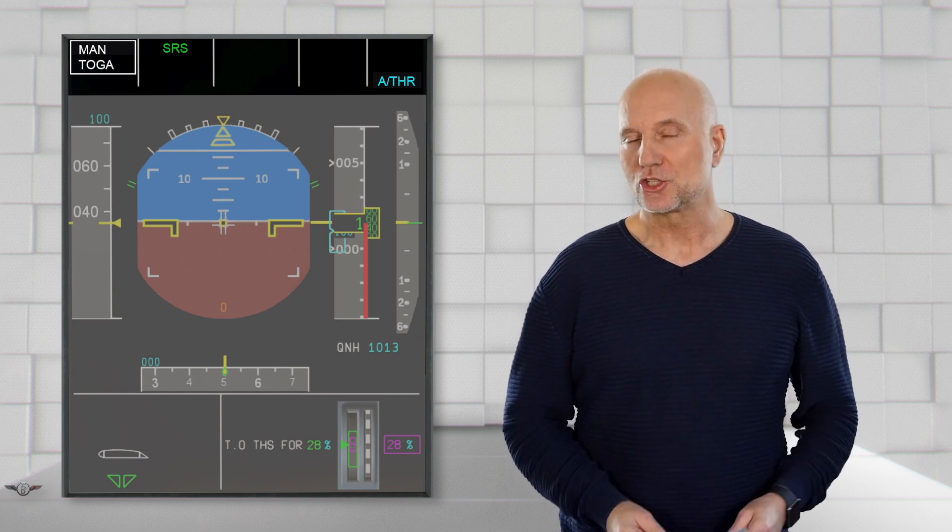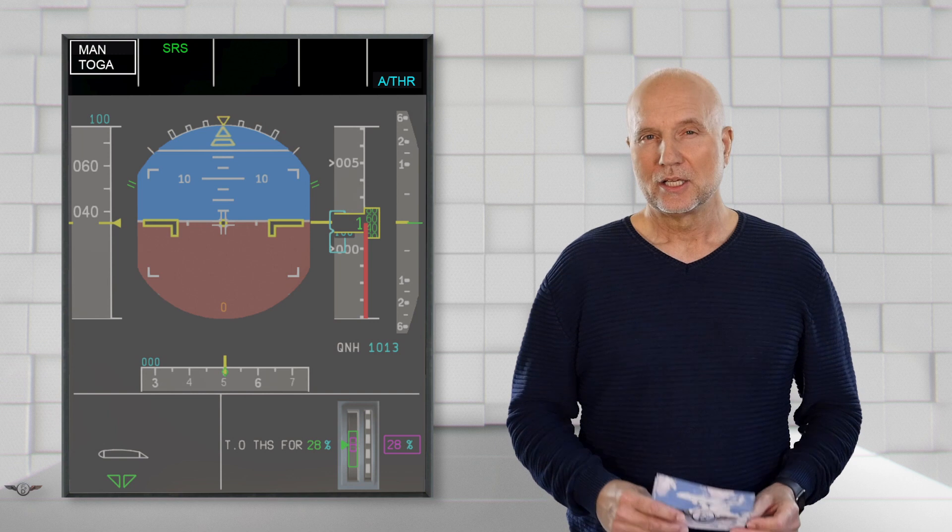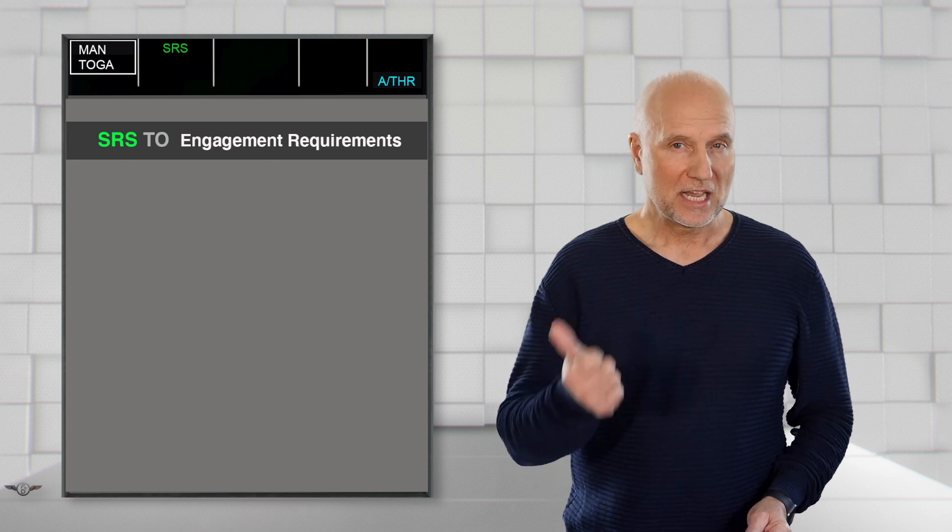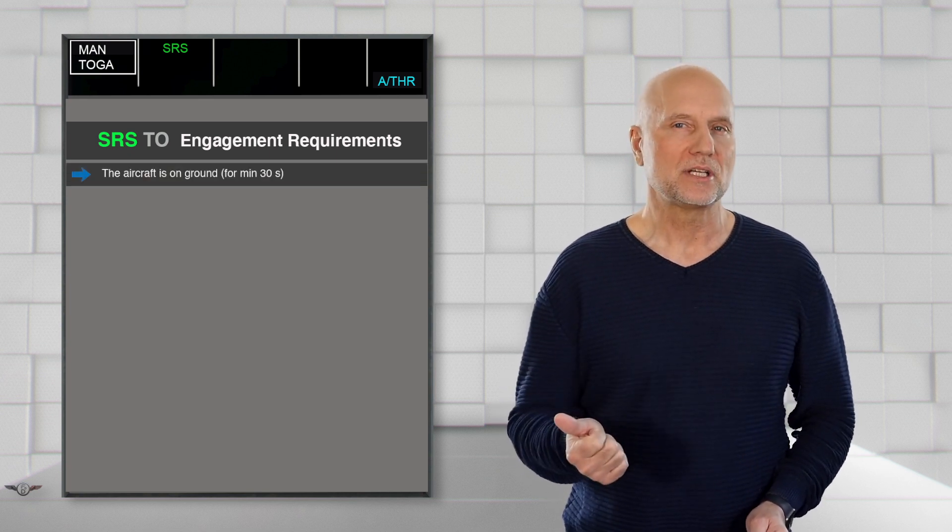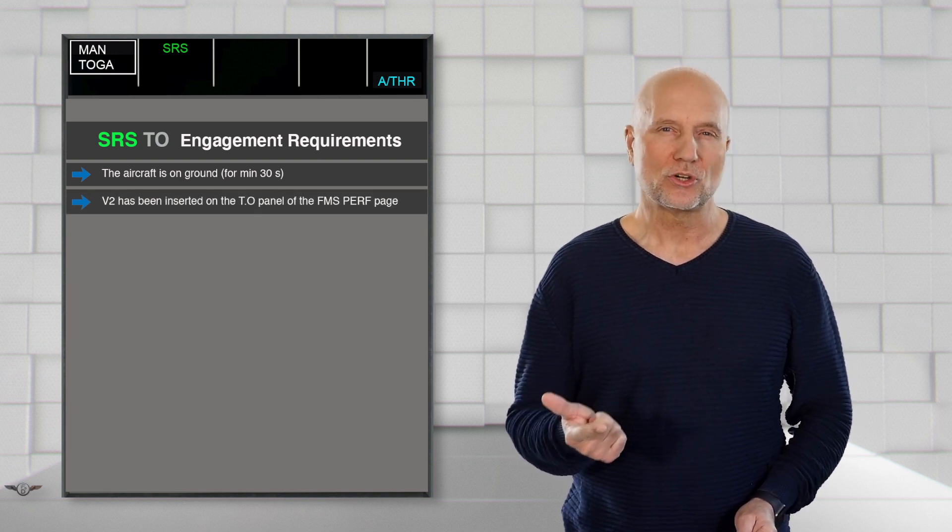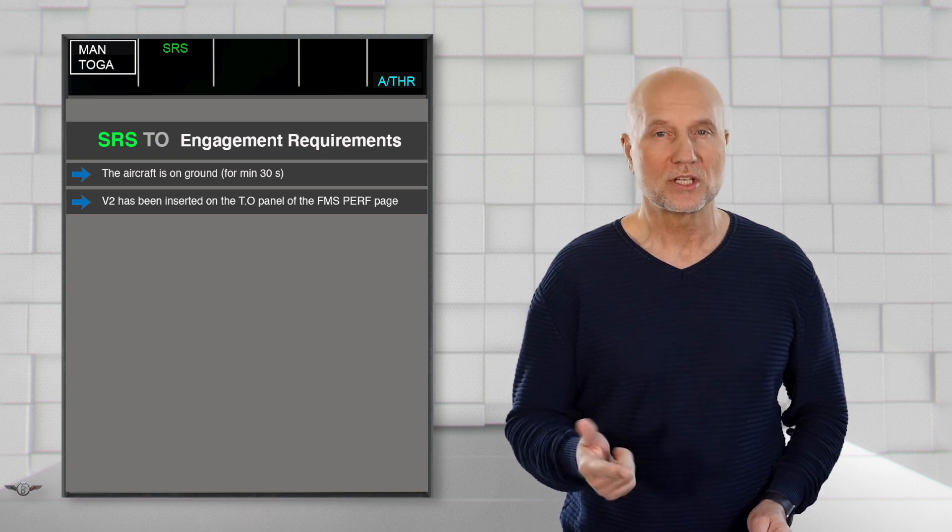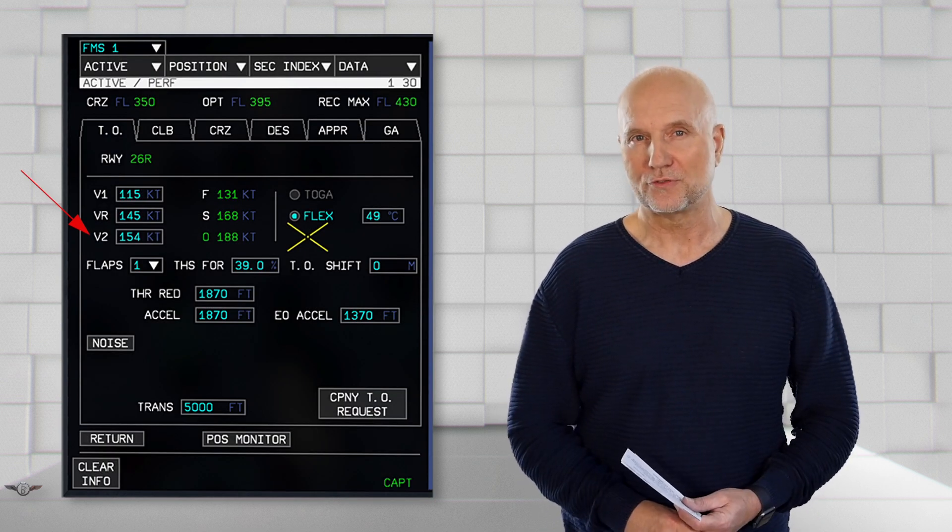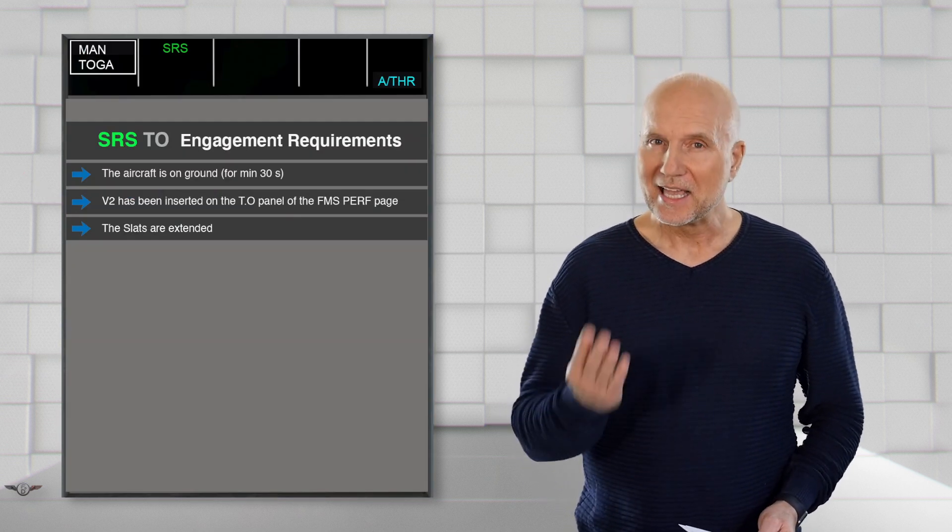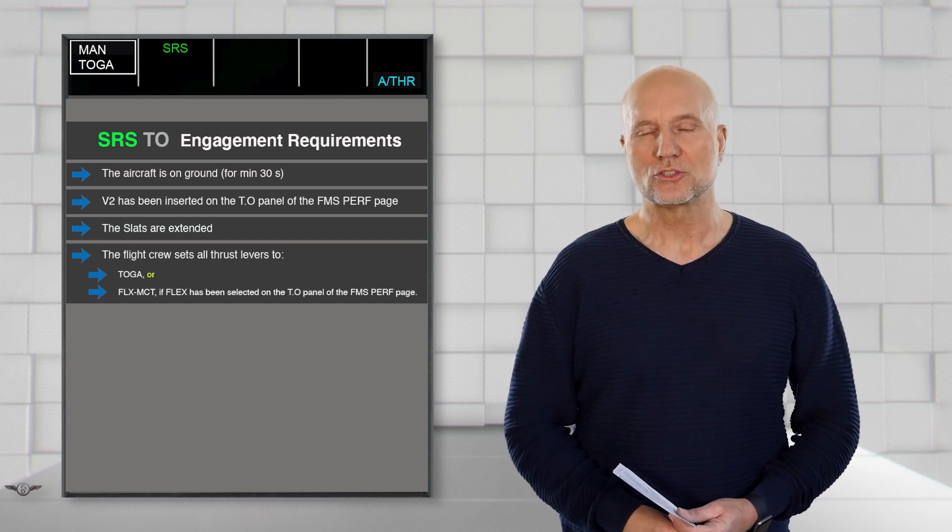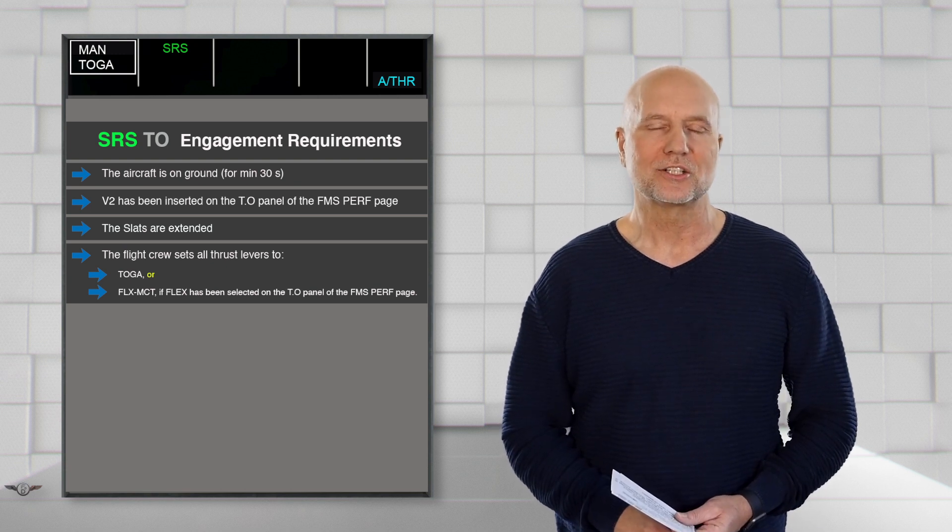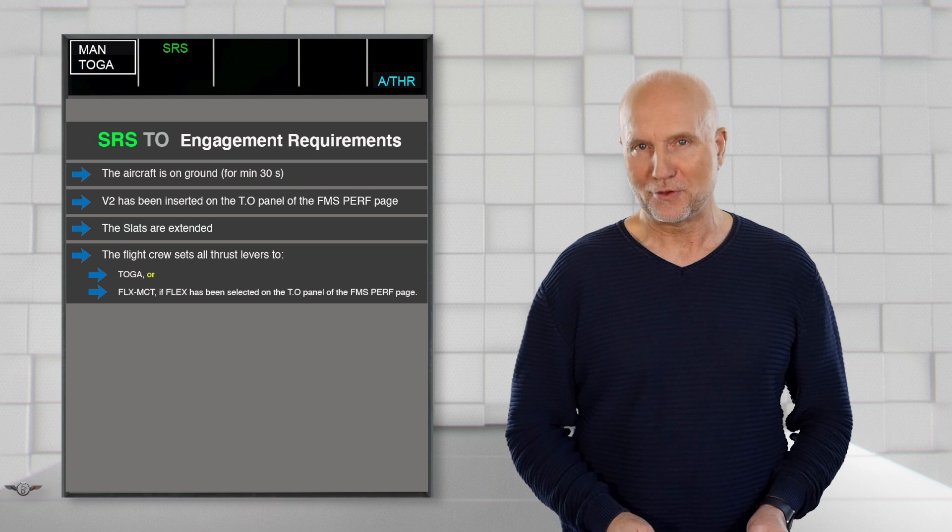SRS is a managed vertical mode. To engage SRS takeoff, certain requirements must be met. The aircraft has to be on the ground for a minimum time of 30 seconds. V2 has been inserted on the takeoff panel of the FMS performance page. Quick reminder: V2 is the takeoff safety speed. The slats are extended and the flight crew sets all thrust levers to either TOGA or FLEX MCT, in case FLEX has been previously selected on the takeoff panel of the FMS performance page.